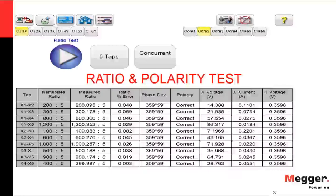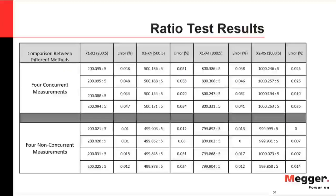For ratio and polarity tests, the ratio magnitude and phase deviation are calculated. Phase deviation should be zero degrees or very close to zero — 359 degrees 59 minutes is acceptable. Polarity is verified as correct. Comparative analysis between concurrent and non-concurrent ratio and polarity measurements again shows negligible differences.